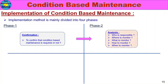Phase 2 is Analysis — determining who is responsible, where to monitor, what to monitor, how to monitor, and when to monitor. We analyze and decide the parameters to check for each machine under Condition Based Maintenance.